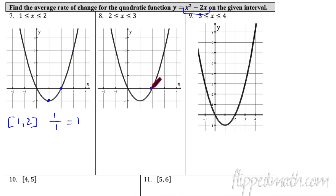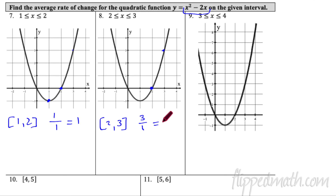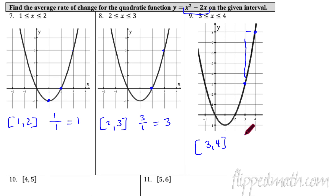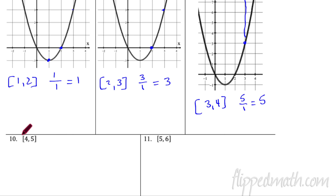Number 8 uses the same function but the interval from 2 to 3. We go up 3 and over 1, so the average rate of change is 3. For number 9, the interval from 3 to 4: we go up 5 and over 1, giving an average rate of change of 5.